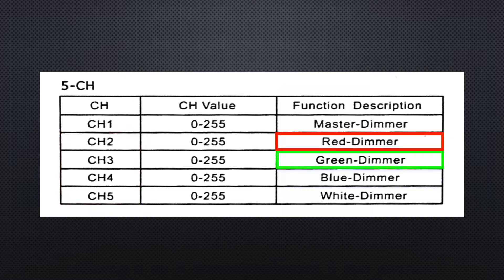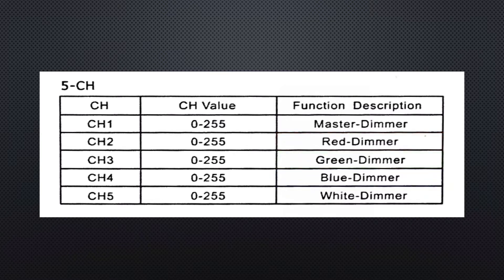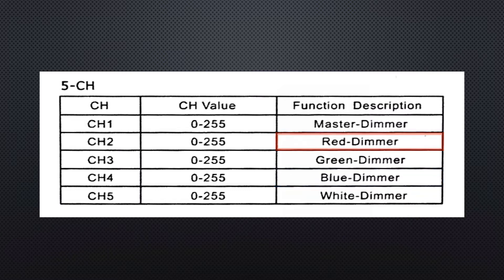Channels 2 through 5 each control the intensity of the individual colors within the fixture — red, green, blue, and white. For example, a value of 255 on channel 2 will turn on the red LEDs to maximum brightness. If we leave channel 2 at 100% and dial channel 4 (blue) up to 100%, you'll have a nice bright purple. Channel 1 functions as a master dimmer for all of the lights in the fixture.